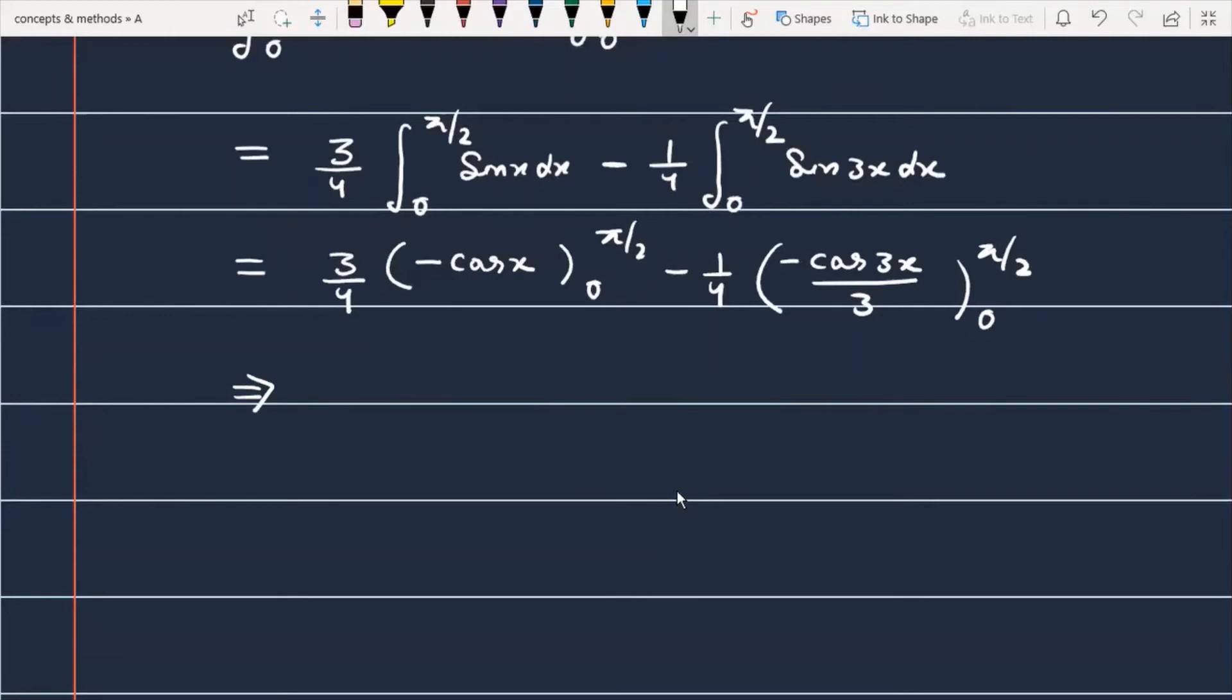Now we have to substitute the limits and see what results we're going to get. So you will separate the minus, that is minus 3 by 4. This becomes cos π/2 minus cos 0. The first term is minus minus plus, and the first term is cos 3π/2 minus cos 0.